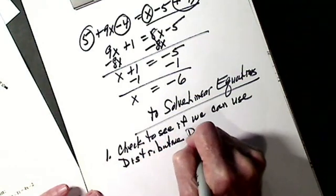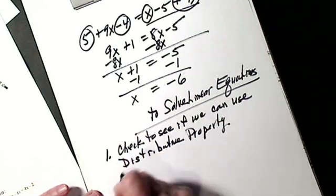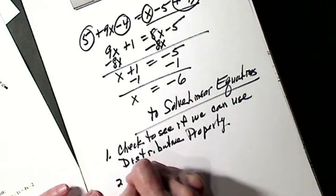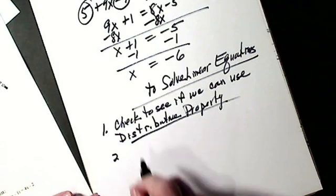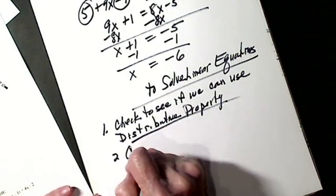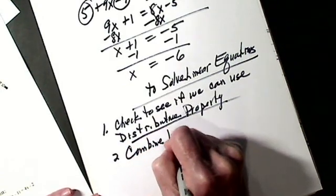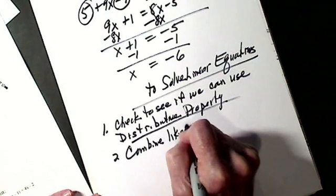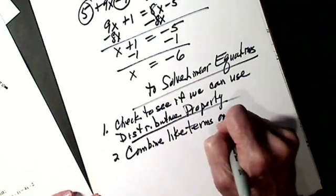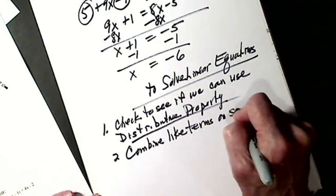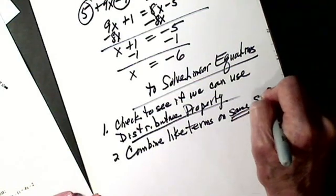If we can, we have to do distributive property first. Second step: combine like terms on the same side of the equal sign.